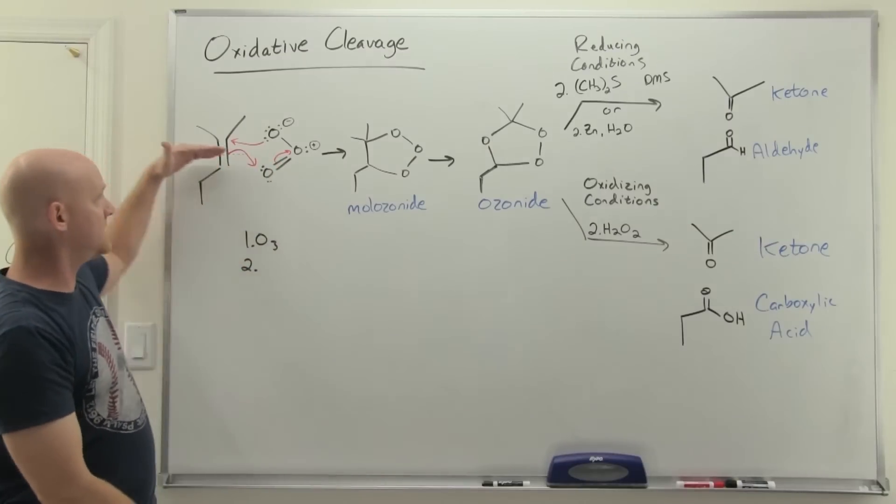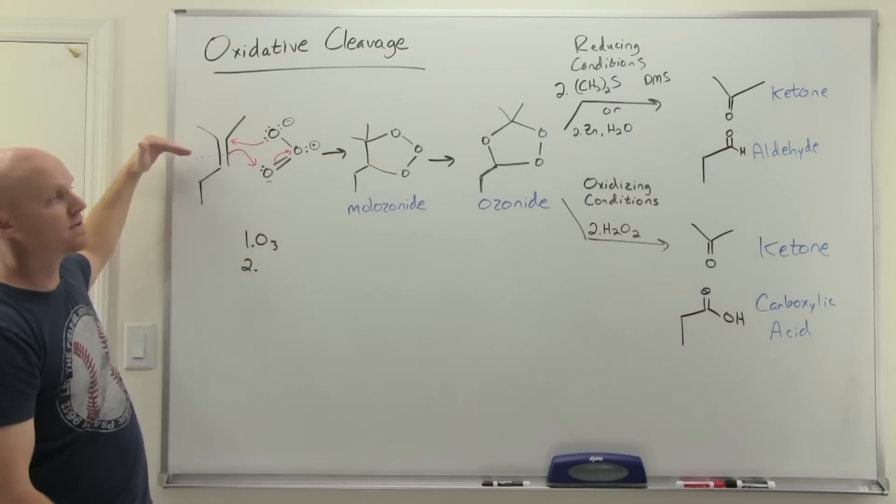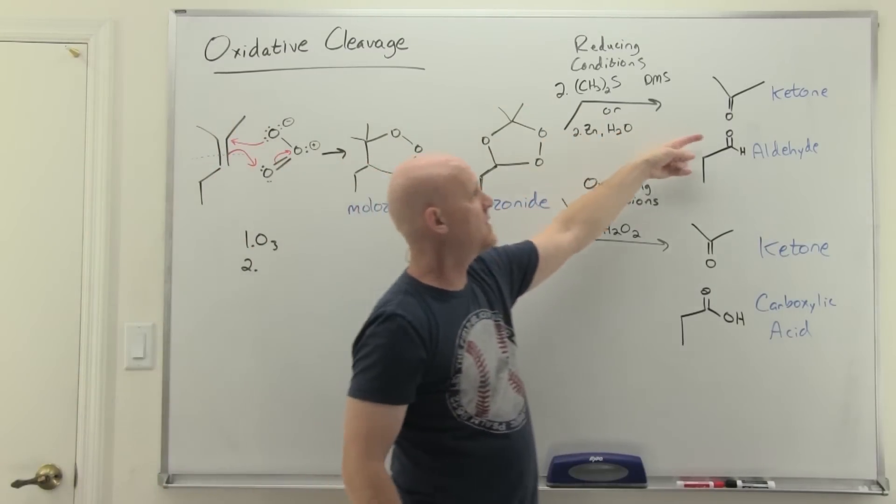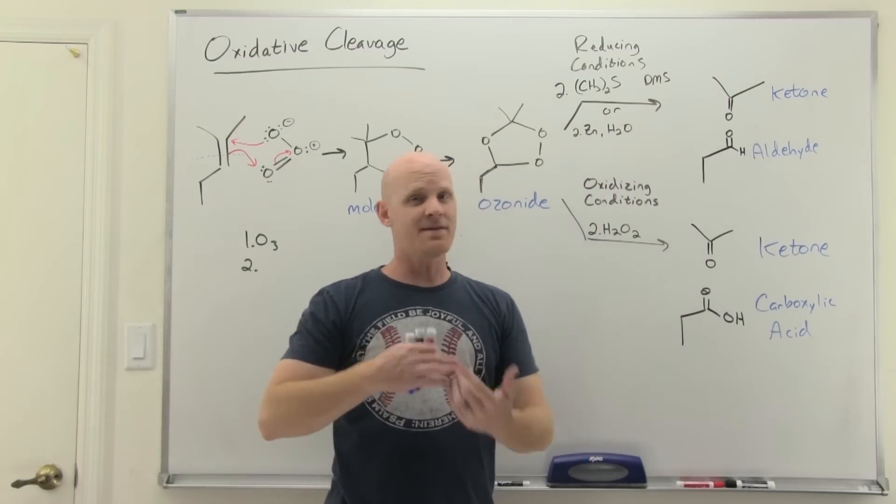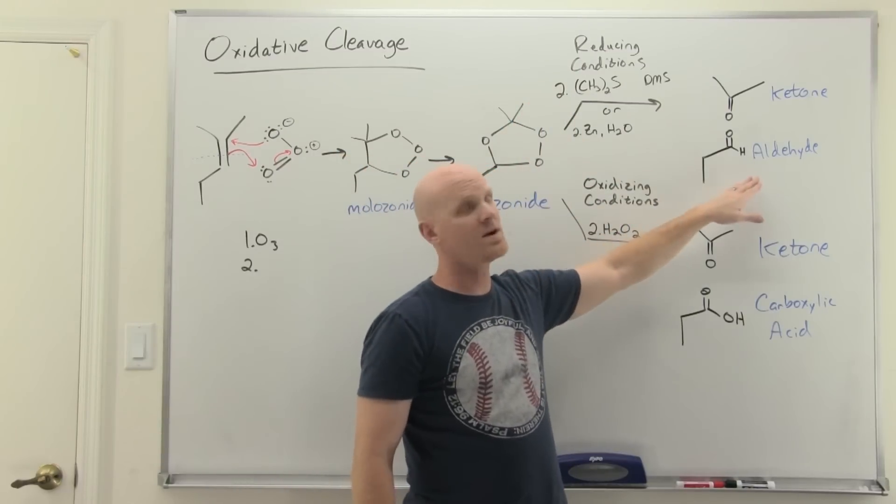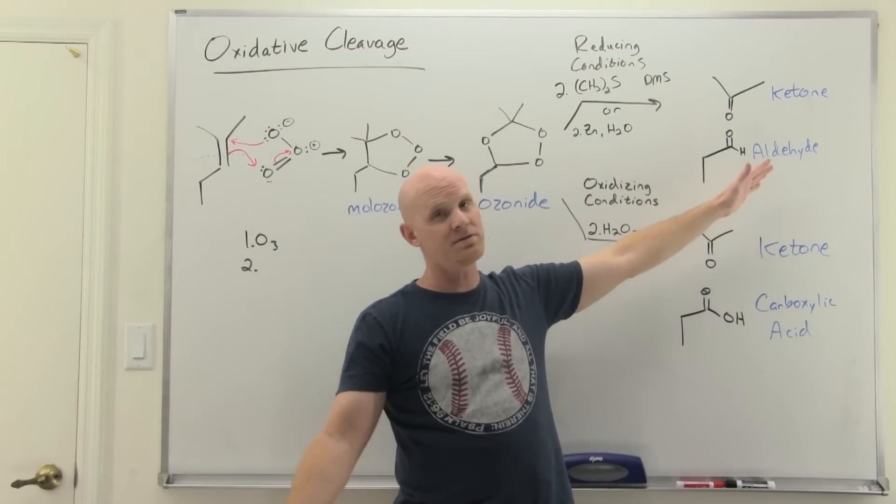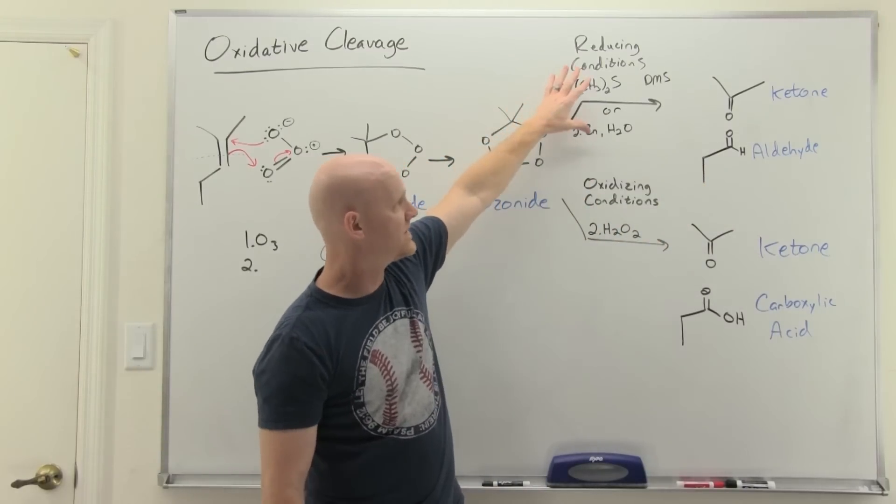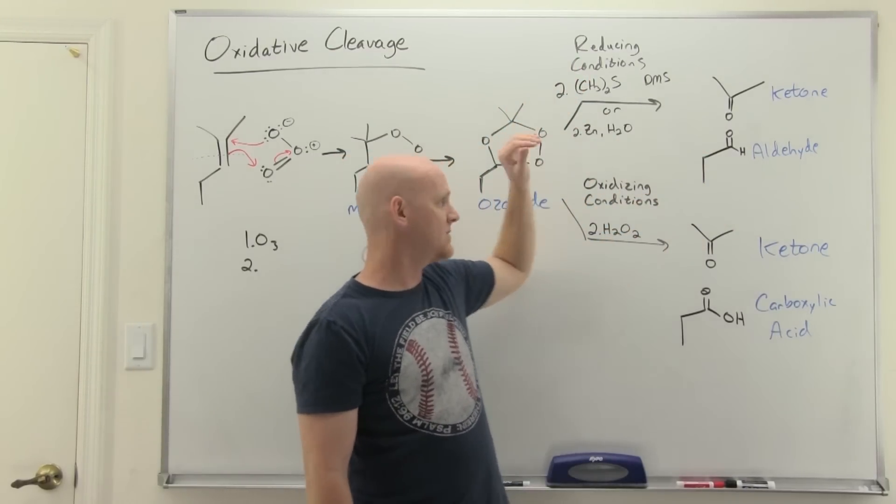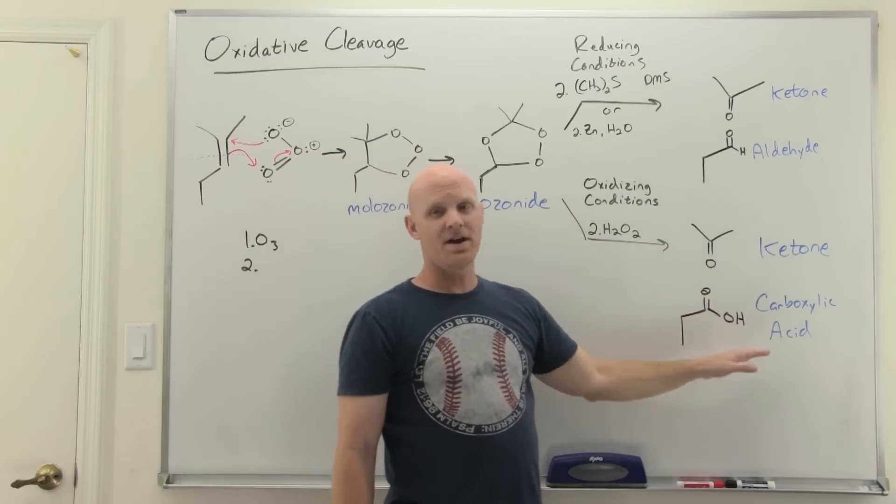If you're predicting the products of ozonolysis, again just cleave your carbon-carbon double bond in half and then give both sides a double bond to oxygen. If either side is a ketone, great, that's never going to change regardless of the conditions. But if one of them turns out to be an aldehyde or both, that's when the conditions matter.